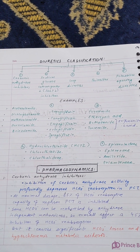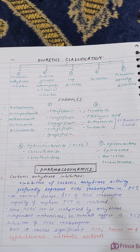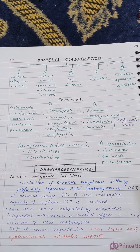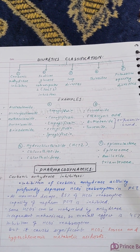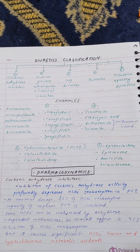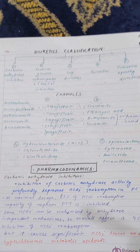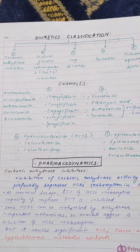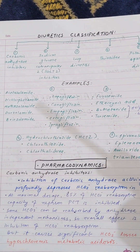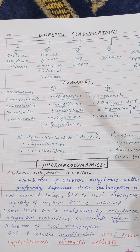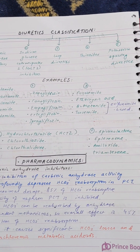Assalamu Alaikum, we are back with another video of 'Memorize with Me.' We are studying renal pharmacology. In the last video, we covered the main important diuretic classifications with examples, looking at four or five classes important for exams: carbonic anhydrase inhibitors, SGLT2 inhibitors, loop diuretics, thiazides, and potassium-sparing diuretics.